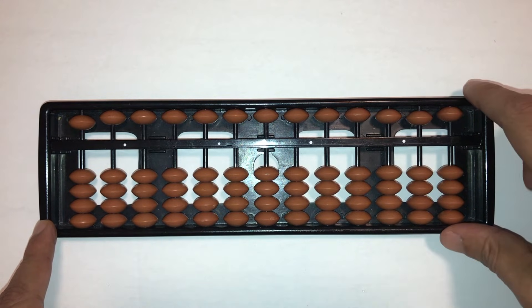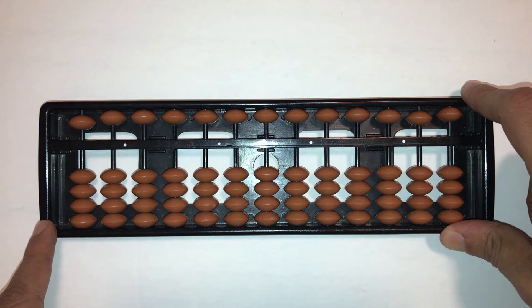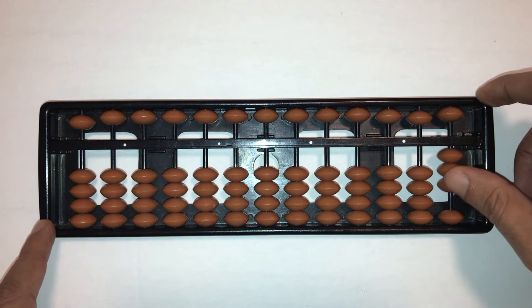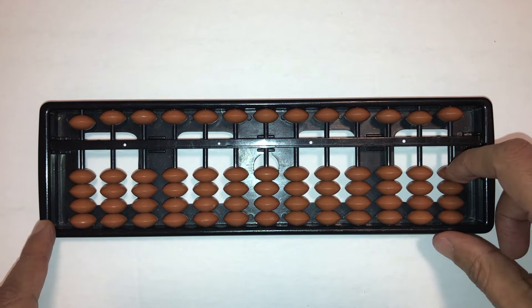You'll sometimes find abacus that's about seven inches in length, but we find that the beads in the smaller size abacus are so small and so close together that there's greater likelihood to accidentally move beads that you did not intend to move. So stick with an abacus that's about 10 inches in length.